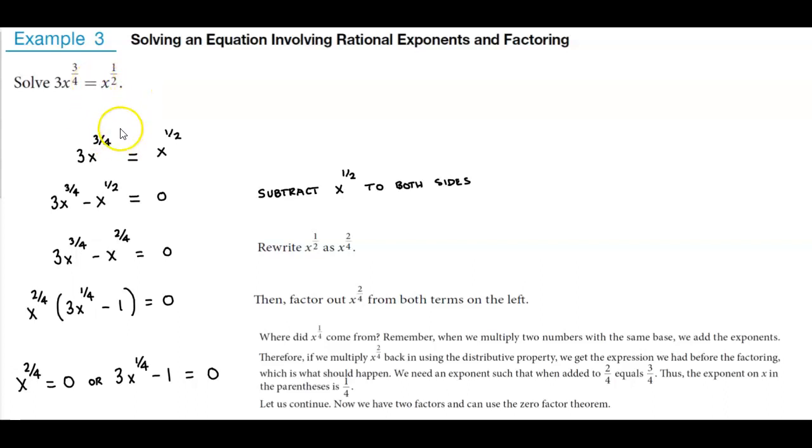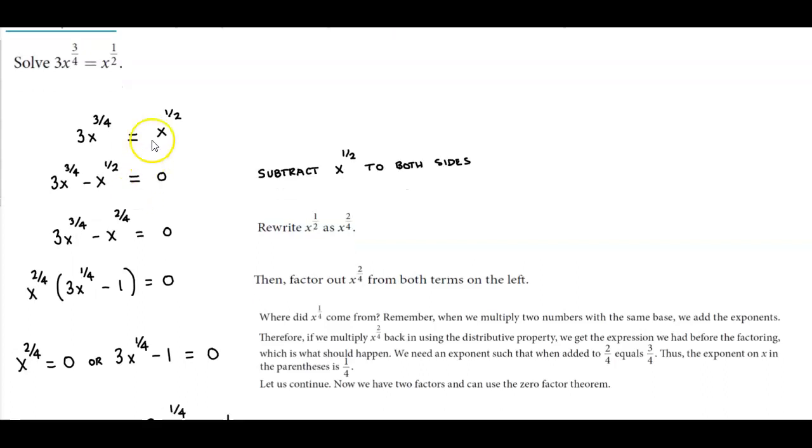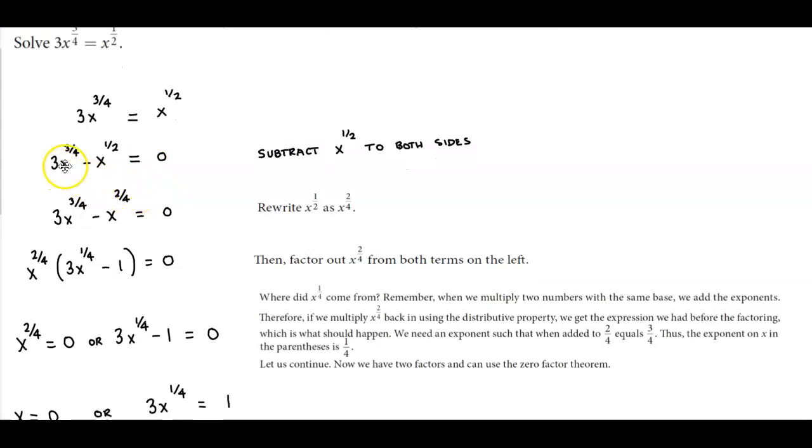In this scenario, since we both have x's on both sides of the equation, we need to get all the x's on one side and set it equal to zero so that we can set this up using the zero product rule. We're going to subtract x to the 1 half to both sides of the equation. So we get 3x to the 3 fourths minus x to the 1 half which is equal to zero.